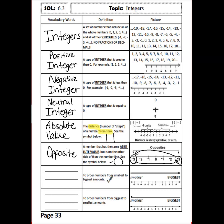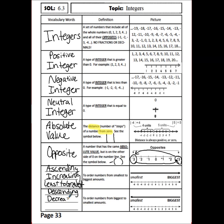To order numbers from smallest to biggest, you could use the words ascending order, increasing order, or least to greatest. That would be moving from left to right on the number line. To order numbers from biggest to smallest, you would move from right to left, using the words descending or decreasing — both start with a D, so think D for down from biggest to smallest. You could also use greatest to least order. All three of these mean the same thing.